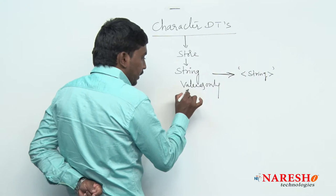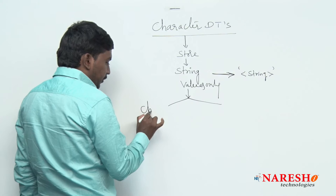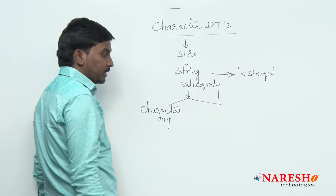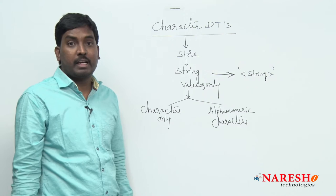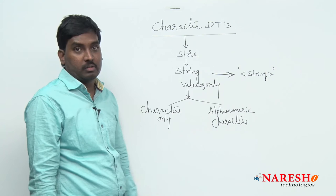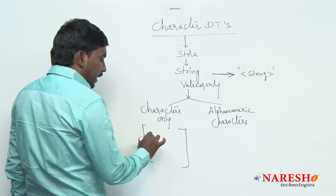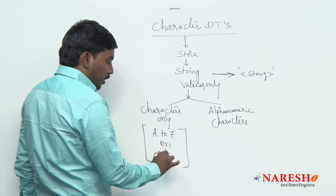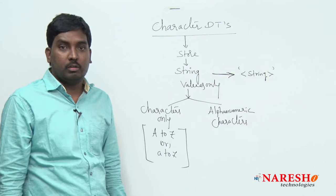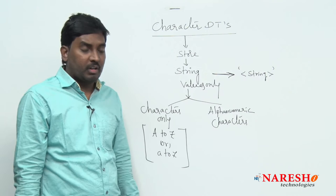Now, these string values may be of two types. The first type is called only character strings — expressions made of only alphabetic characters. The second type is alphanumeric characters. So a string expression may contain characters only, or it may contain alphanumeric characters. Characters means only alphabets — that is, A to Z, either uppercase or lowercase.